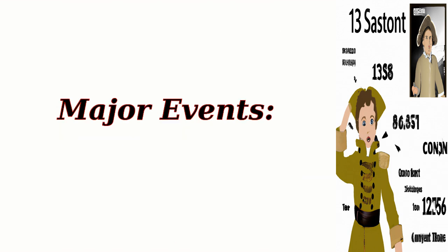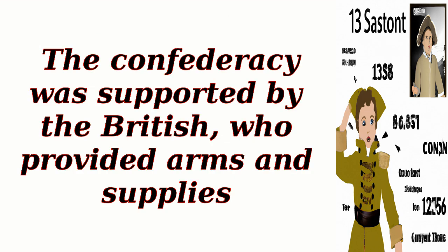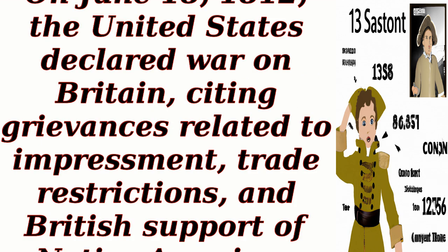Major events. Tecumseh's Confederacy: Native American leader Tecumseh formed a confederation of tribes in the Northwest Territory to resist American expansion. The confederacy was supported by the British, who provided arms and supplies. Declaration of War: On June 18, 1812, the United States declared war on Britain, citing grievances related to impressment, trade restrictions, and British support of Native American resistance.